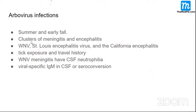Arboviruses also appear in summer, in clusters of meningitis or encephalitis. These include West Nile virus, St. Louis encephalitis virus, and California encephalitis virus. History of tick exposure or travel to an epidemic area is important. West Nile virus meningitis characteristically shows CSF neutrophilia — unlike other viral meningitides. Diagnosis is by virus-specific IgM antibodies in CSF and seroconversion in blood. IgM indicates acute infection.